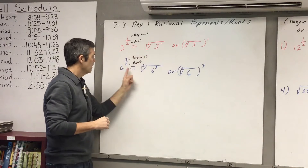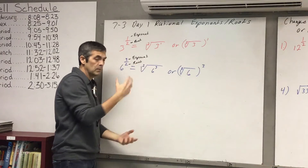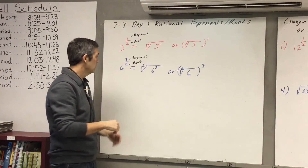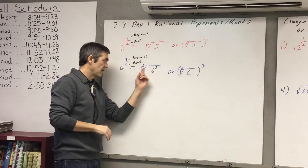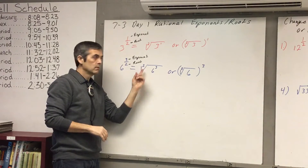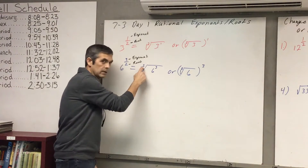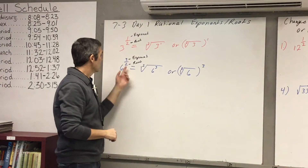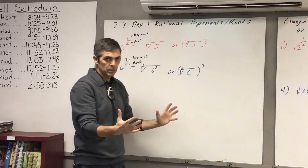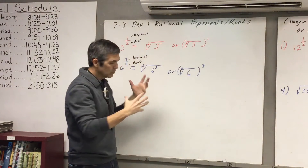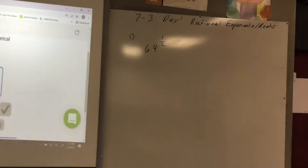Understanding this fraction: the top number represents your exponent — the number that's being raised to — and the bottom number is the root. If that denominator was a 5, a 5 would go inside the root. Whatever that number is, it goes right there. And then whatever the numerator is, it raises the base or the whole thing to that power. Now we're going to get into some examples.